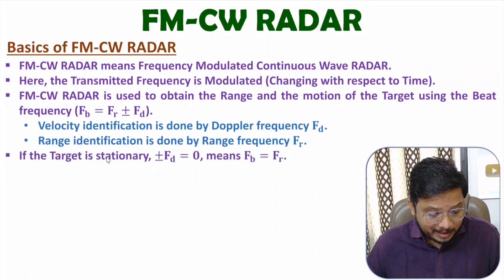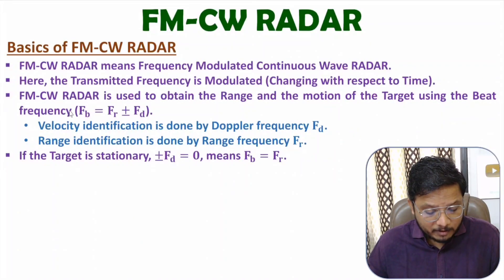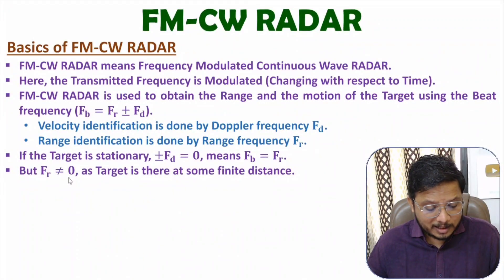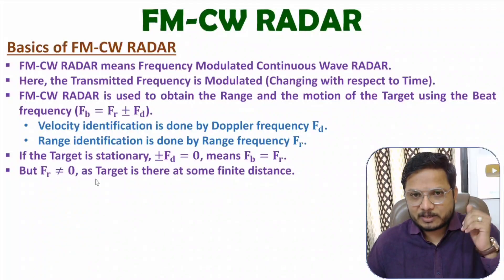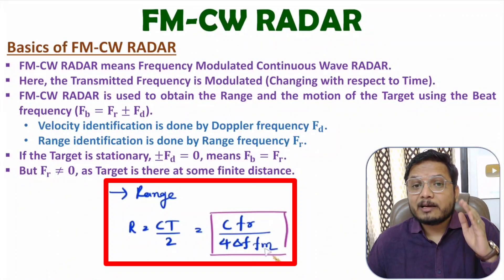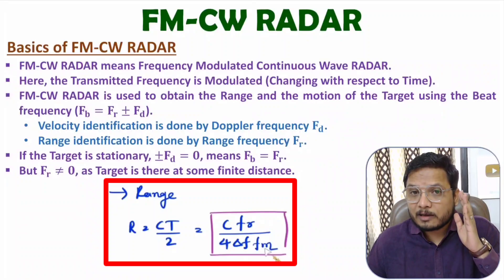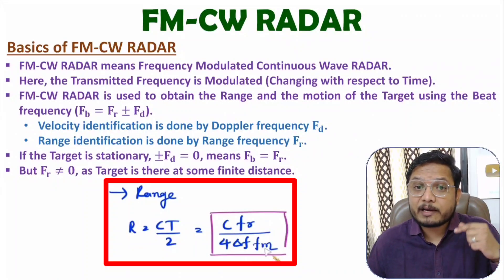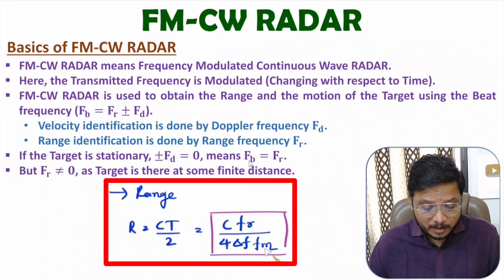If the target is stationary, then Doppler frequency will be zero, meaning beat frequency equals range frequency. But range frequency cannot be zero, because obviously the target will be at some distance. In my last video, I derived range calculation based on range frequency, so you can go through that video to understand how we identify range from range frequency.